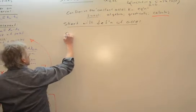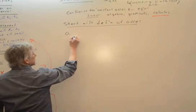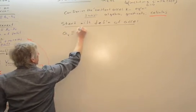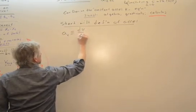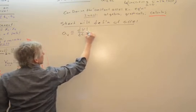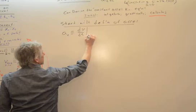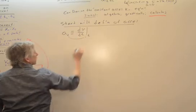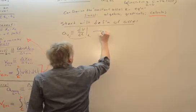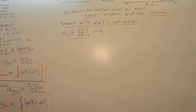I'm going to go acceleration at an instant, at some time, is defined as the velocity over time or the derivative of velocity with respect to time at that particular time, whatever that is, t1, whatever it is. What I'm going to do is turn that into an integral.